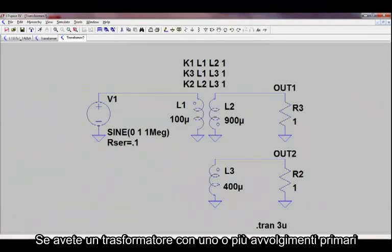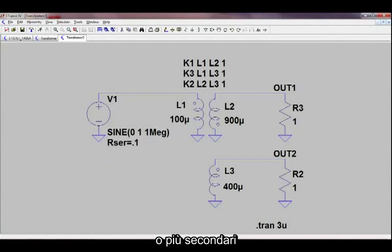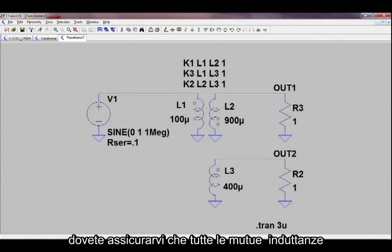When you have a transformer with more than one primary or more than one secondary winding, you have to make sure that all mutual inductances are included in the K statements.